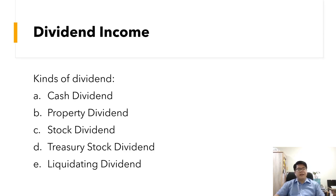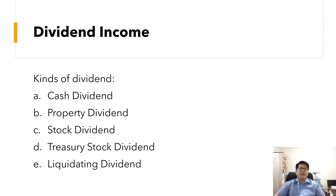There are different kinds of dividends: cash dividend, property dividend, stock dividend, treasury stock dividend, and liquidating dividend. Cash dividend is a sum of money paid by a company to its shareholders out of its profits, reserves, or retained earnings. Many listed companies pay dividends typically on a quarterly basis. In a property dividend, the stockholder will receive assets of the company other than cash.